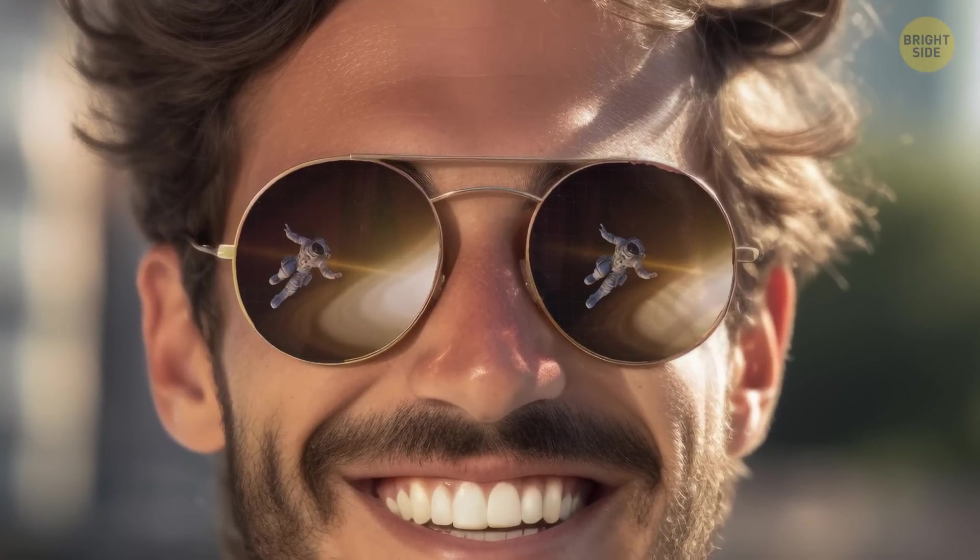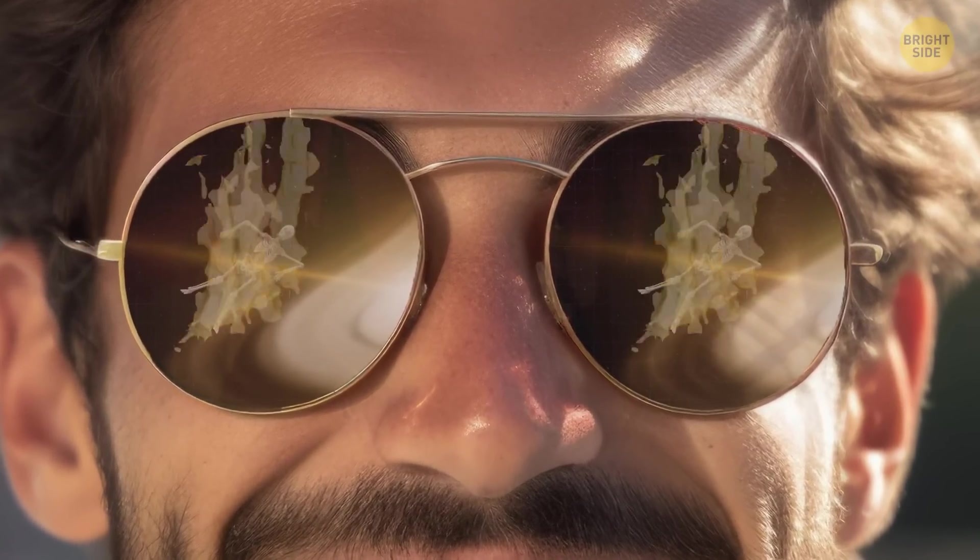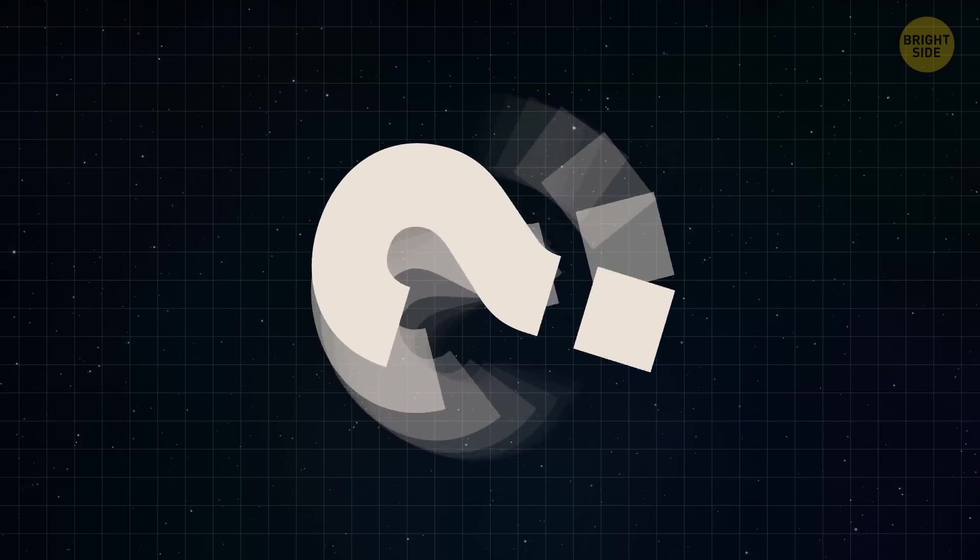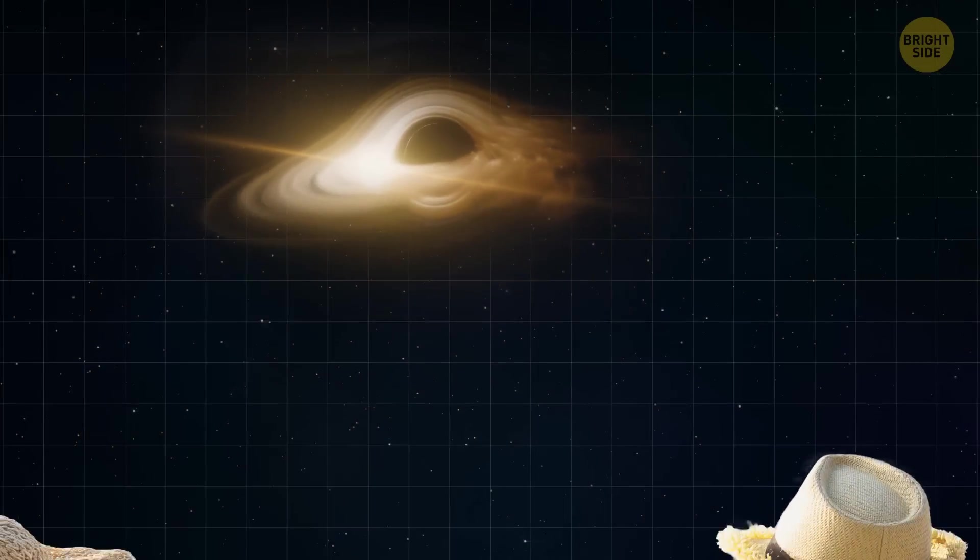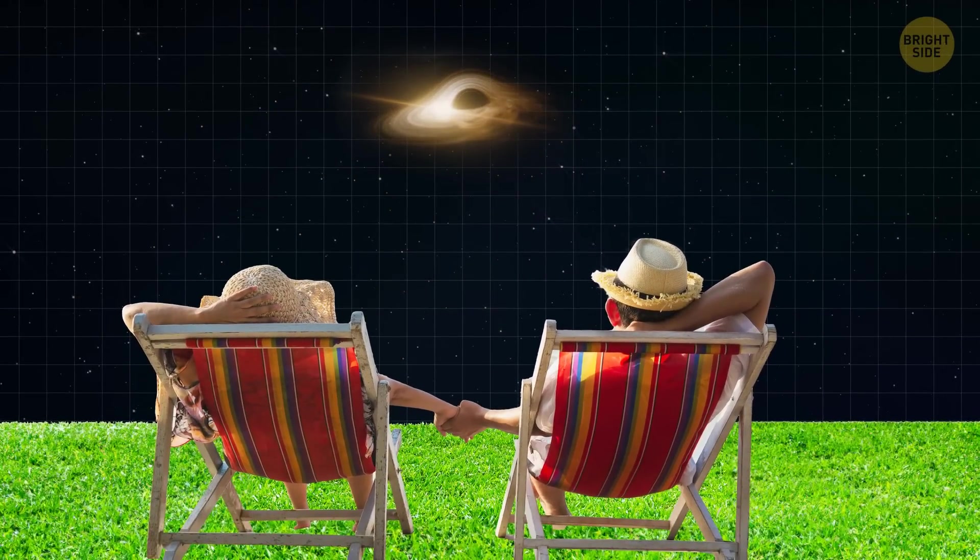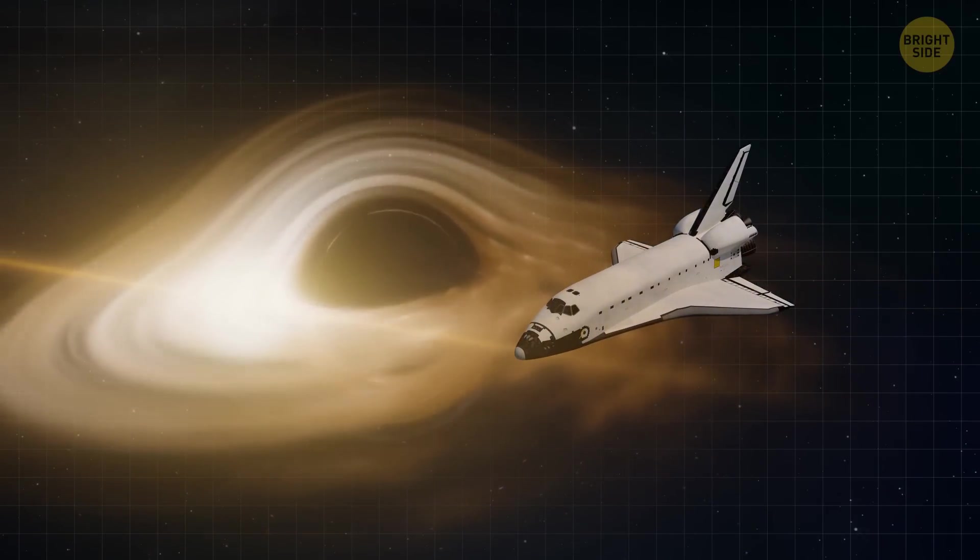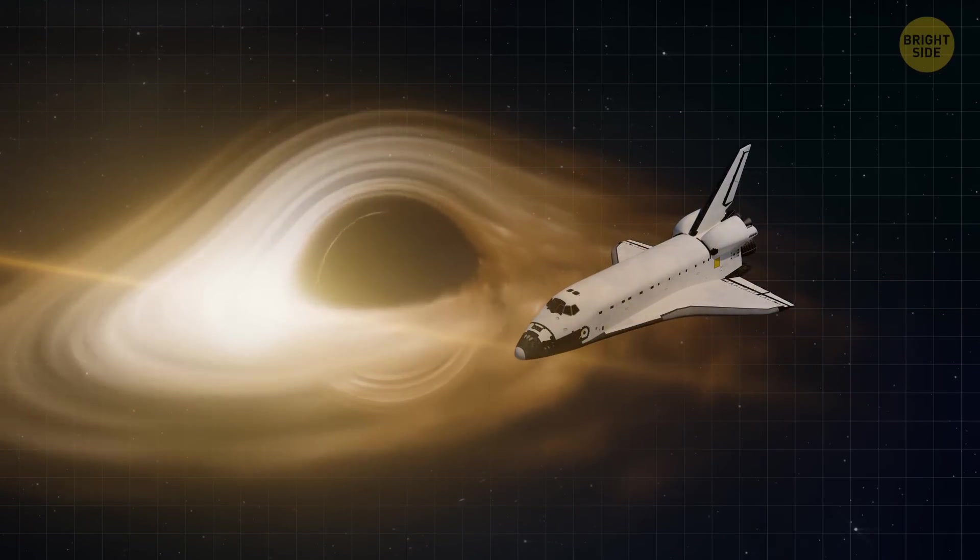But not only is it nearly impossible to fall into a black hole, it's also impossible to see someone falling in it. Why? Let's find out. Imagine you're standing far away from a black hole, watching something getting closer and closer to the event horizon. As this thing, let's say it's a spaceship, falls into the black hole, two very strange things start happening.